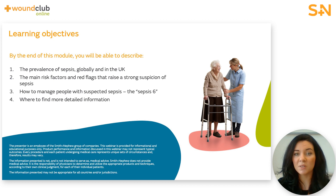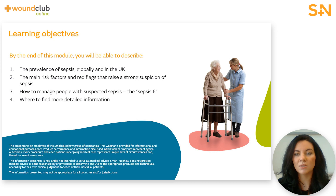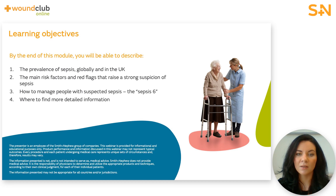By the end of this module you should be able to describe a brief history of sepsis including steps taken in the UK in recent years to raise awareness of the disease, the prevalence of sepsis globally and in the UK, the main risk factors and red flags that raise a strong suspicion of sepsis, how to manage people with suspected sepsis using protocols like the Sepsis 6, why people with chronic wounds are at risk of sepsis and what you can do about it, and where to find more detailed information.